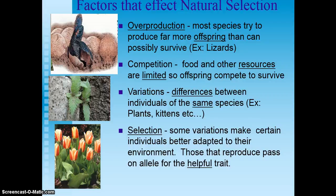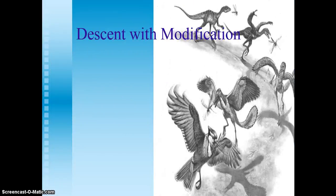So, in order for natural selection to occur, you have to have a lot of offspring — overproduction. There needs to be some sort of competition for resources. You need some genetic variation. And then selection, where some of those variations result in individuals being better adapted to their environment.